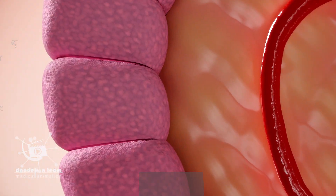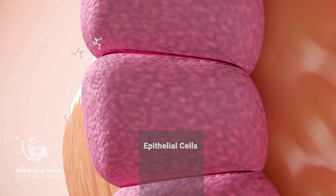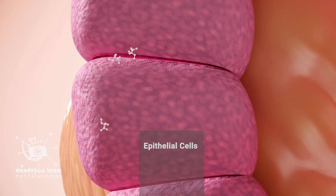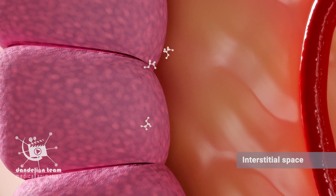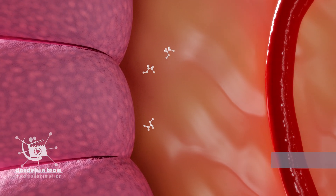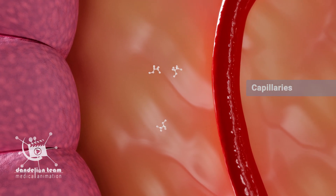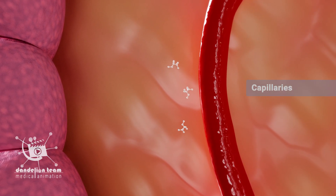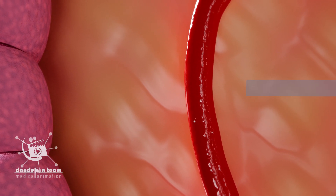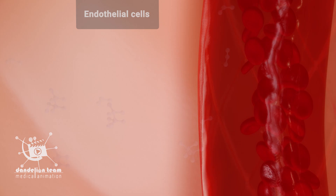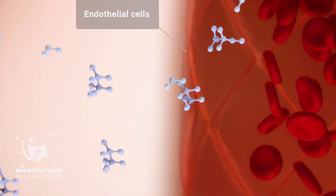To be absorbed, alcohol moves across the epithelial cells, through the intestinal space, into the capillaries. The capillaries are made of endothelial cells.